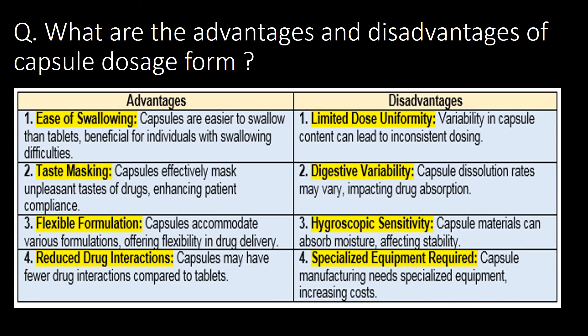What are the advantages and disadvantages of capsule dosage form? The four major advantages of capsule dosage form are: ease of swallowing, taste masking, flexible formulation, and reduced drug interactions. Whereas capsule dosage form also has some disadvantages like limited dose uniformity, digestive variability, hygroscopic sensitivity, and specialized equipment requirement.